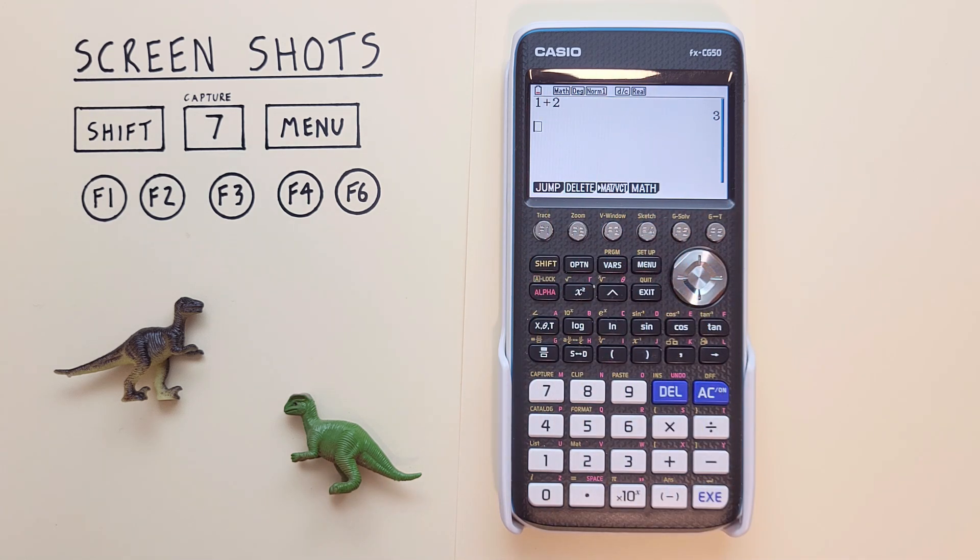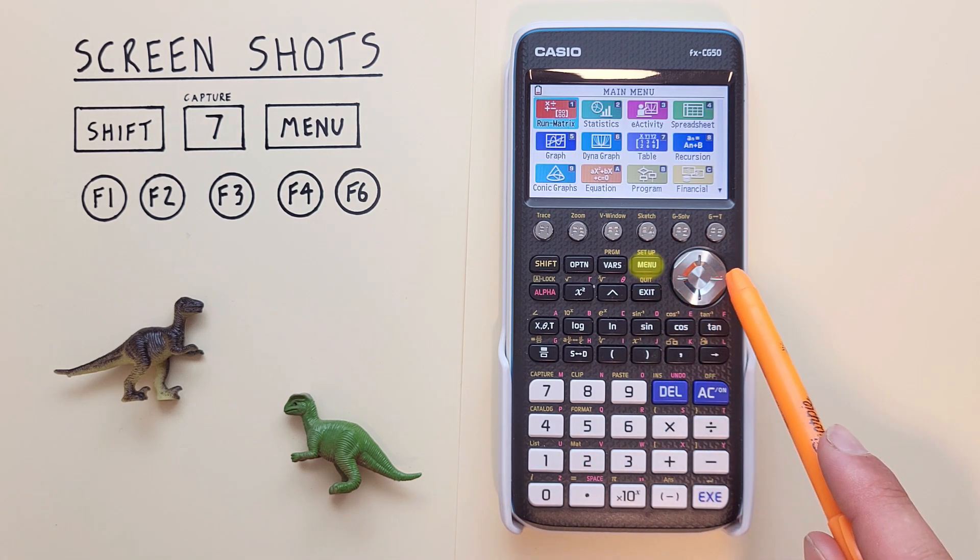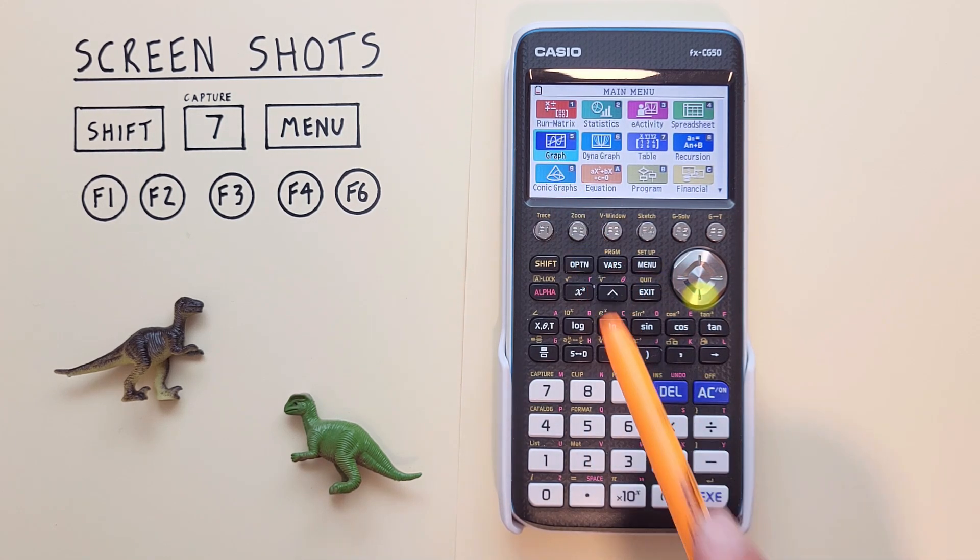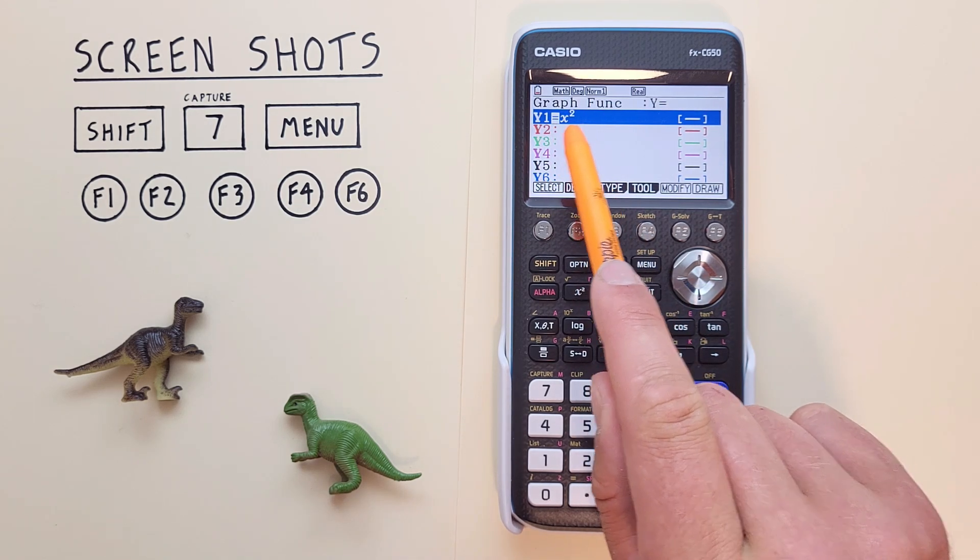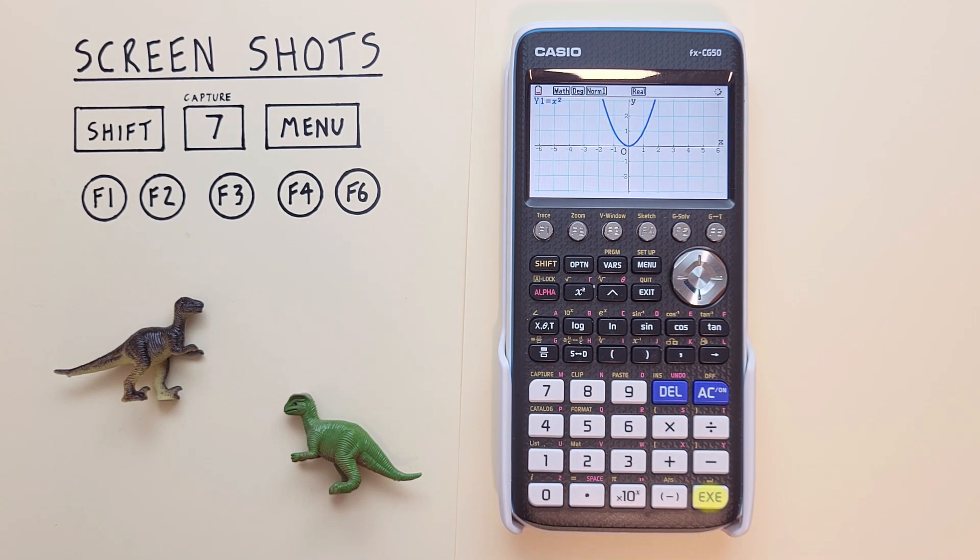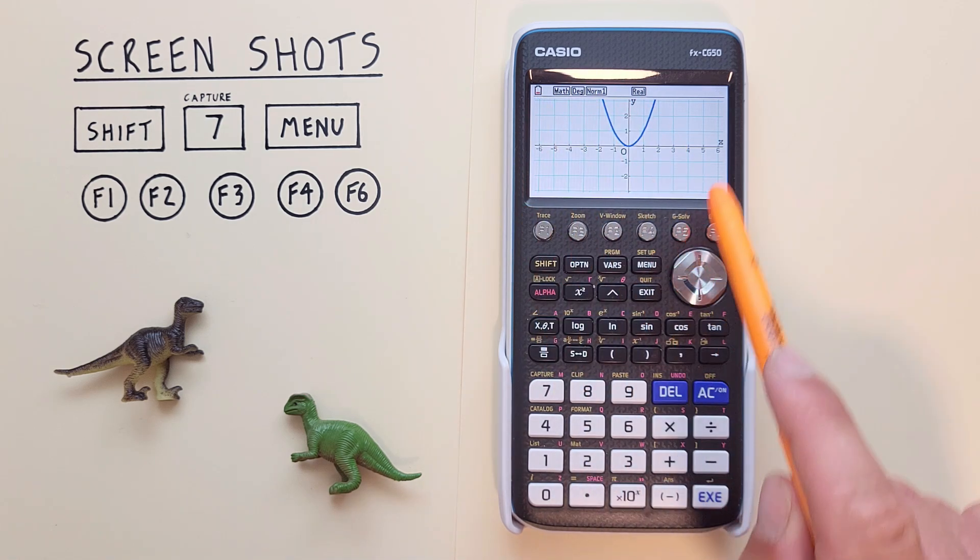Let's save a second one. This time, how about a graph? So if we go to the menu, scroll over to our graph app, we see we already have x squared entered here. So we highlight that and view our graph.